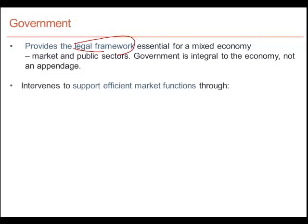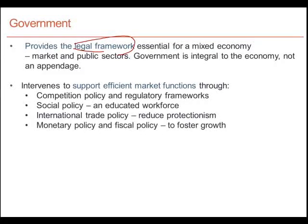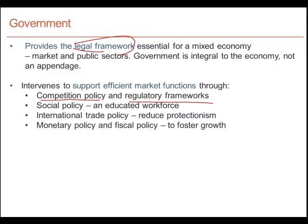Domestically, the government seeks to improve the efficiency with which the economy operates. It has competition policy and regulatory frameworks. Governments try to limit monopolies as much as possible, and that is why we have competition policy. We have regulatory frameworks, which means that the government sets out standards that products made in Canada must meet if they are to go into the marketplace.